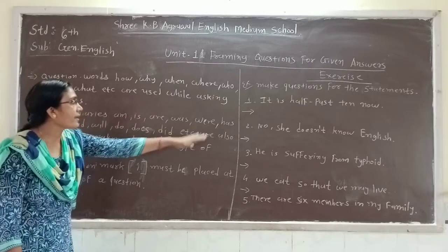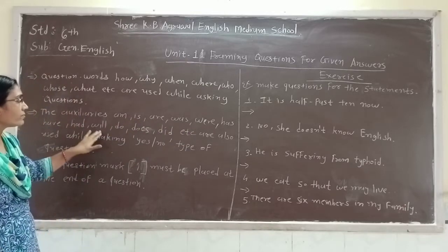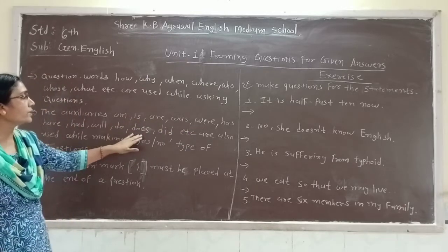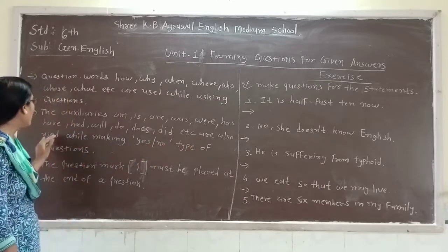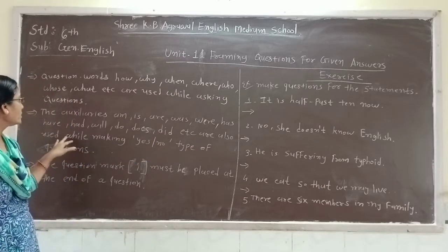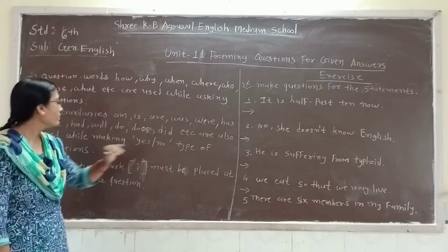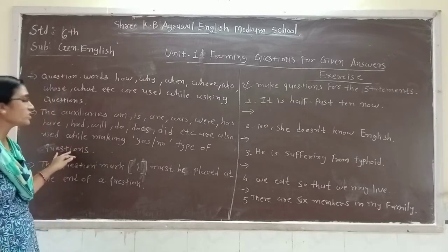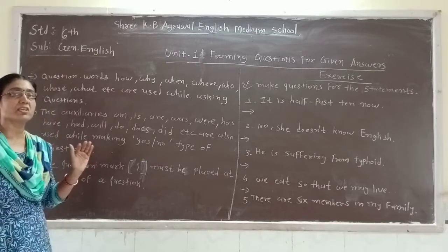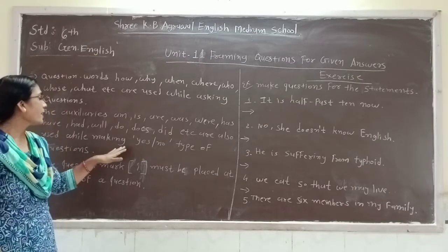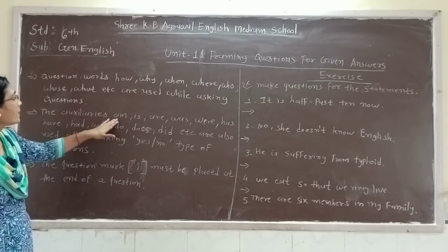The auxiliary verbs — are, was, will, has, have, had, does, did, etc. are also used for making yes/no type questions.